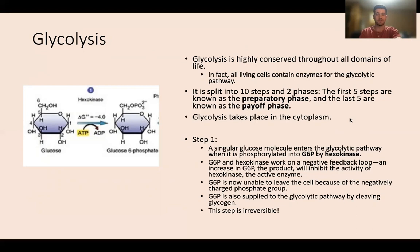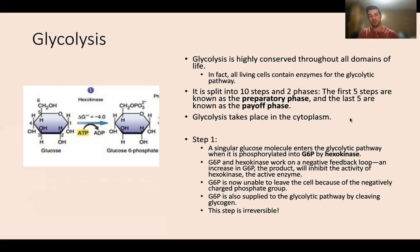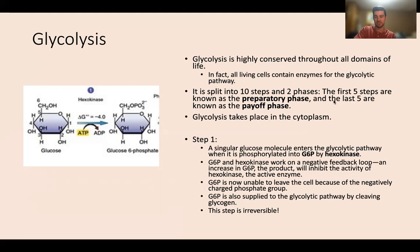In step one, a single glucose molecule enters the glycolytic pathway when it is phosphorylated into G6P by hexokinase — a phosphate group is added to the sixth carbon of glucose. G6P and hexokinase work on a negative feedback loop: an increase in G6P inhibits hexokinase activity. G6P is unable to leave the cell because of the negatively charged phosphate, which sequesters it inside the cell. G6P is also supplied to the pathway by cleaving glycogen. Step one is irreversible and is considered one of the committed steps to glycolysis.